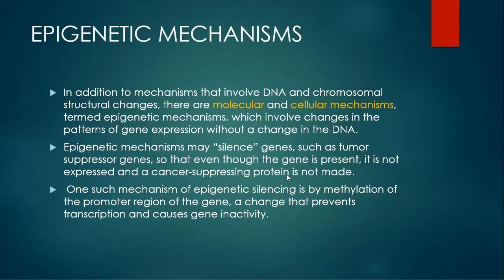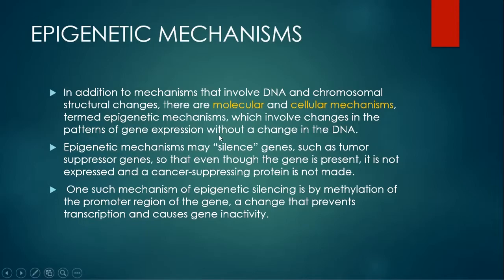In addition to mechanisms involving DNA and chromosomal structural changes, there are molecular and cellular mechanisms termed epigenetic mechanisms, which involve changes in the patterns of gene expression without a change in the DNA. Epigenetic mechanisms may silence genes such as tumor suppressor genes so that even though the gene is present it is not expressed and a cancer-suppressing protein is not made. An example of epigenetic silencing is methylation of the promoter region of a gene, a change that prevents transcription and causes gene silencing.